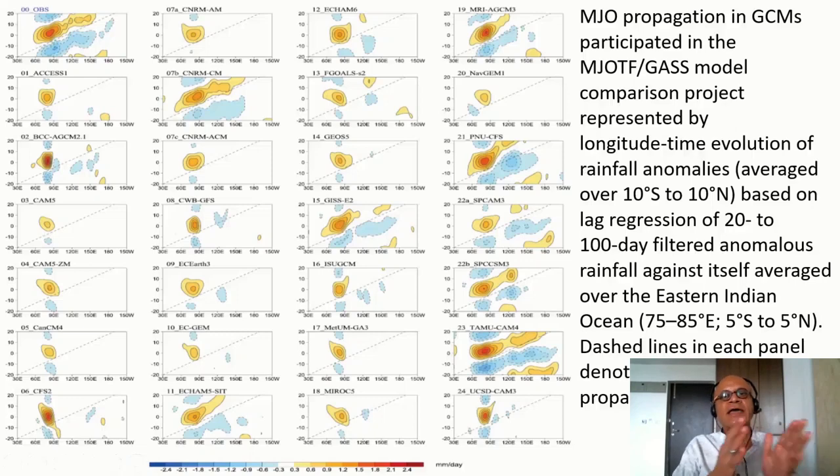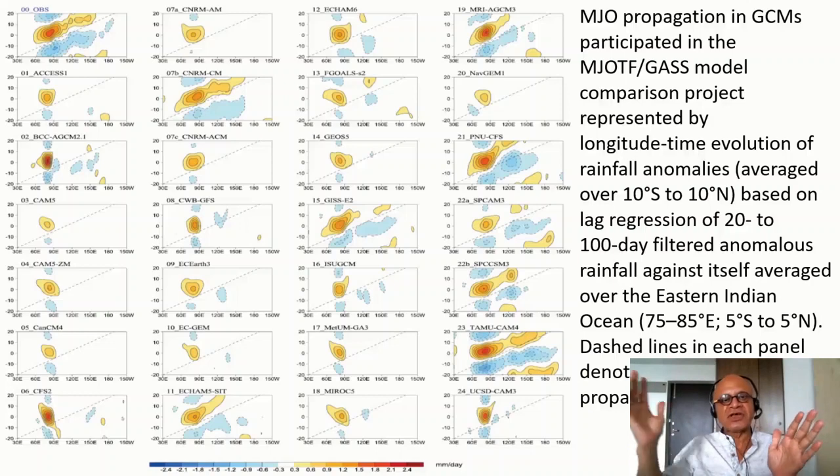We don't know exactly why certain MJOs get stuck, certain MJOs become weaker and then strengthen again, some are detoured southward and so on.